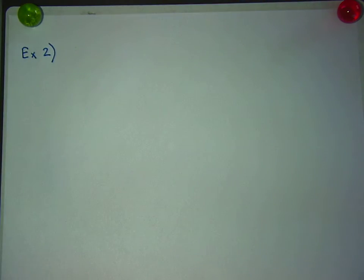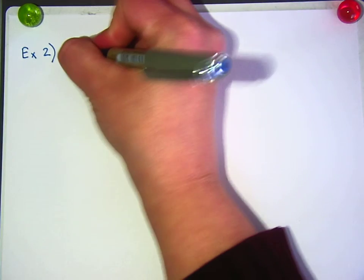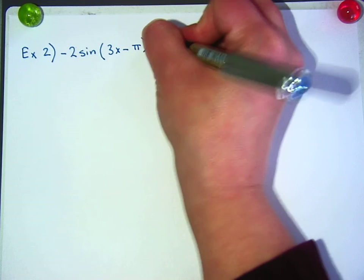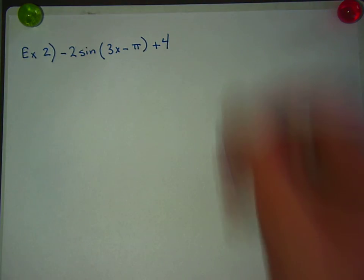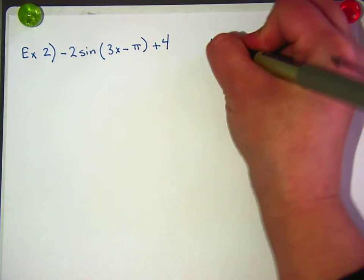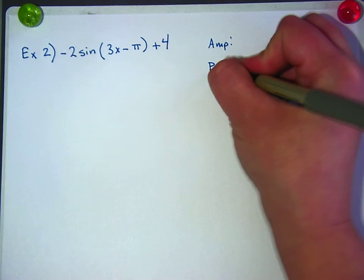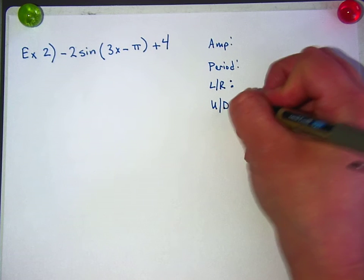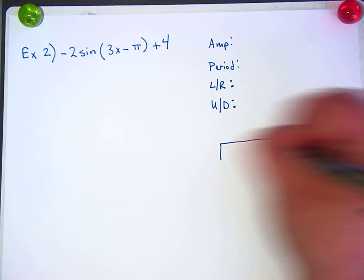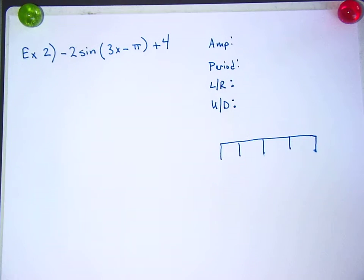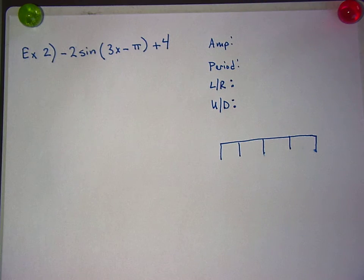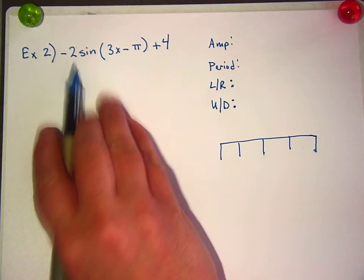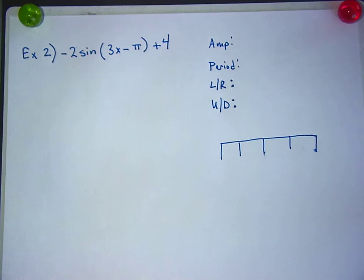Example two. All right, negative two sine of three x minus pi in parentheses plus four. All right, we're going to write down our things on the side here. We're going to need to know the amplitude. We're going to need to know the period. We're going to need to know the left-right shift. We're going to need to know the up-down shift. And then we're going to make some tallies. This is what your paper should look like every time, except for, of course, if it's a simple problem where it's like y equals three sine x, where it's just, oh, I go up to three and down to negative. Like, it's a simple problem. I wouldn't do this. But when it starts getting to be all these things, I would do this every time.